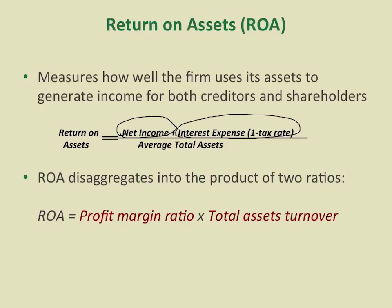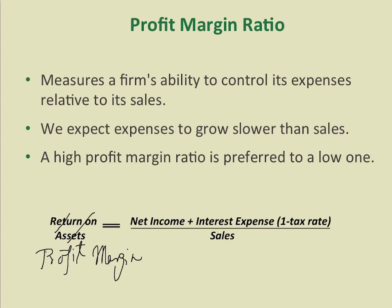We want this ratio to be high. To better understand ROA, we can disaggregate it into two components: the profit margin ratio and the total asset turnover ratio. This disaggregation shows that both ratios affect changes in ROA. The profit margin ratio equals net income plus after-tax interest expenses divided by sales — it tells us how much return can be squeezed from every $1 of sales, measuring the company's ability to control expenses relative to its revenue.